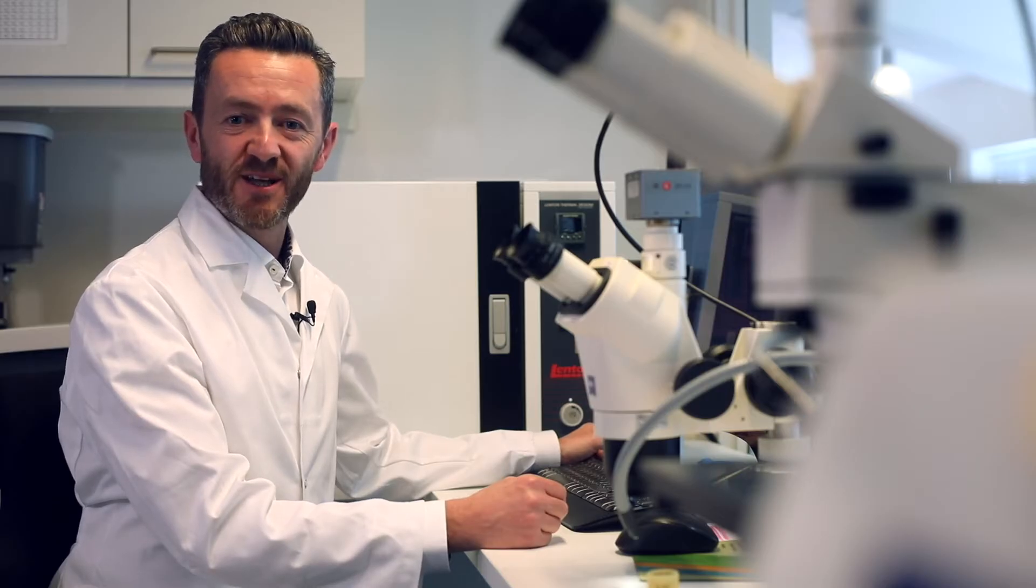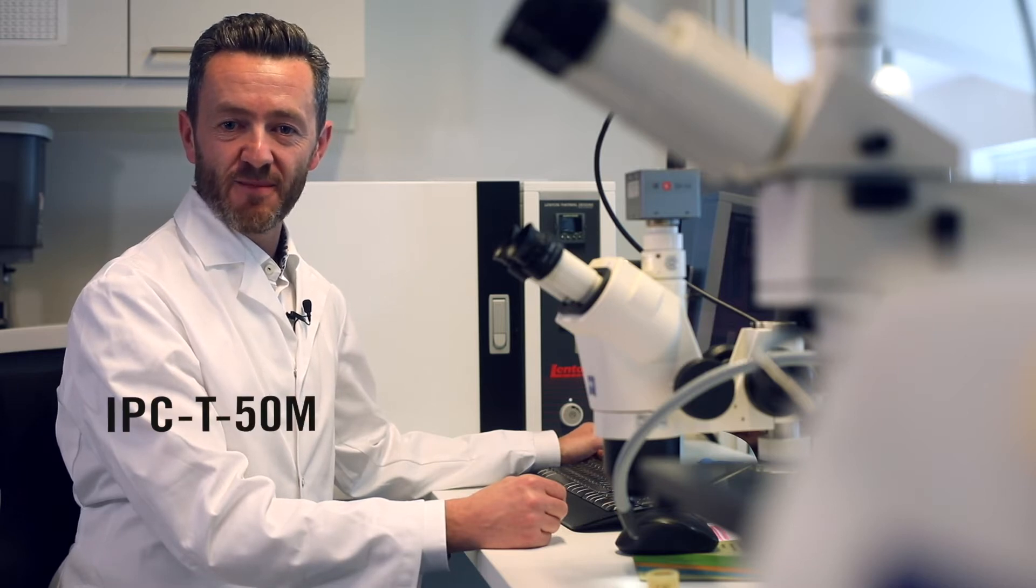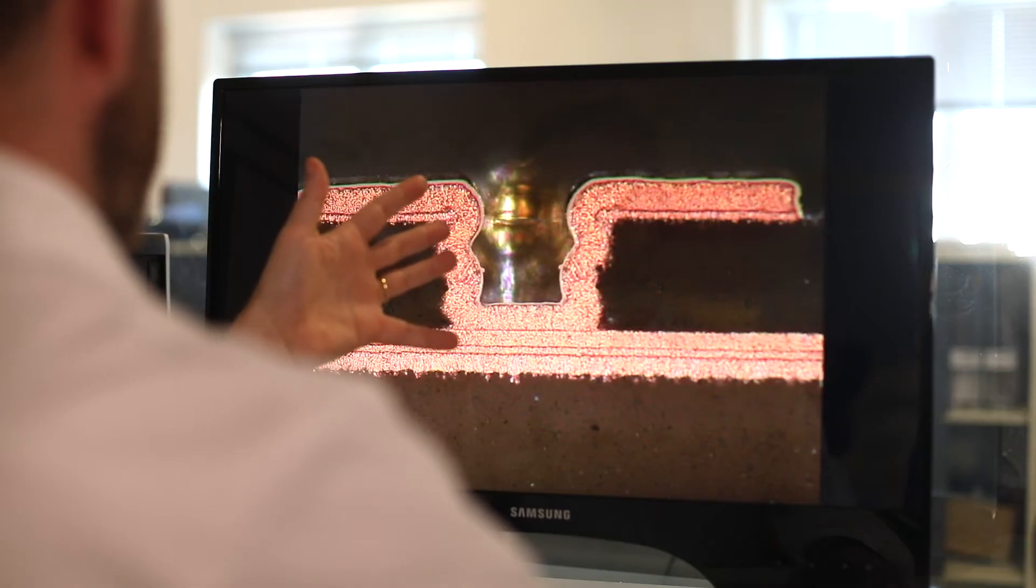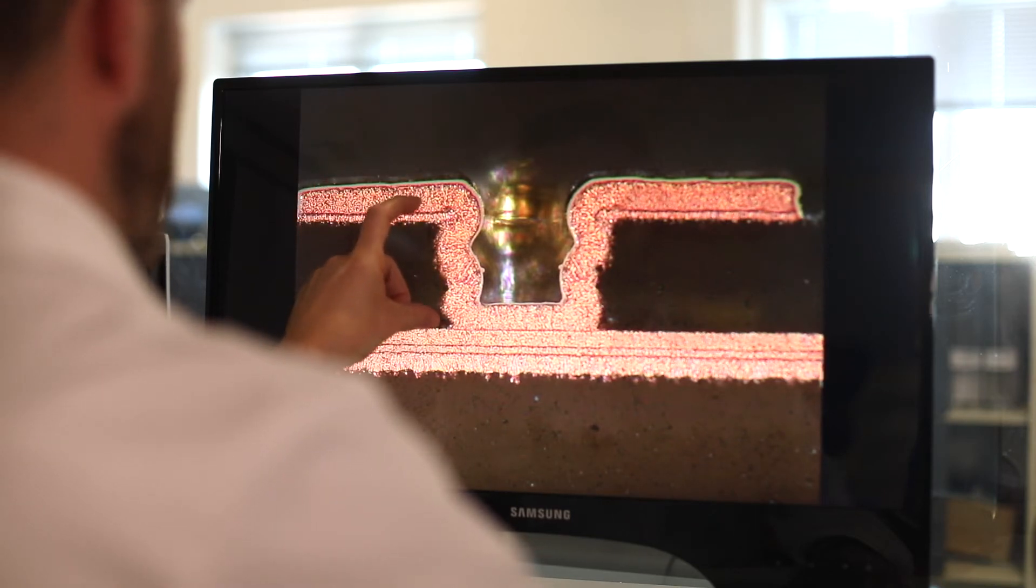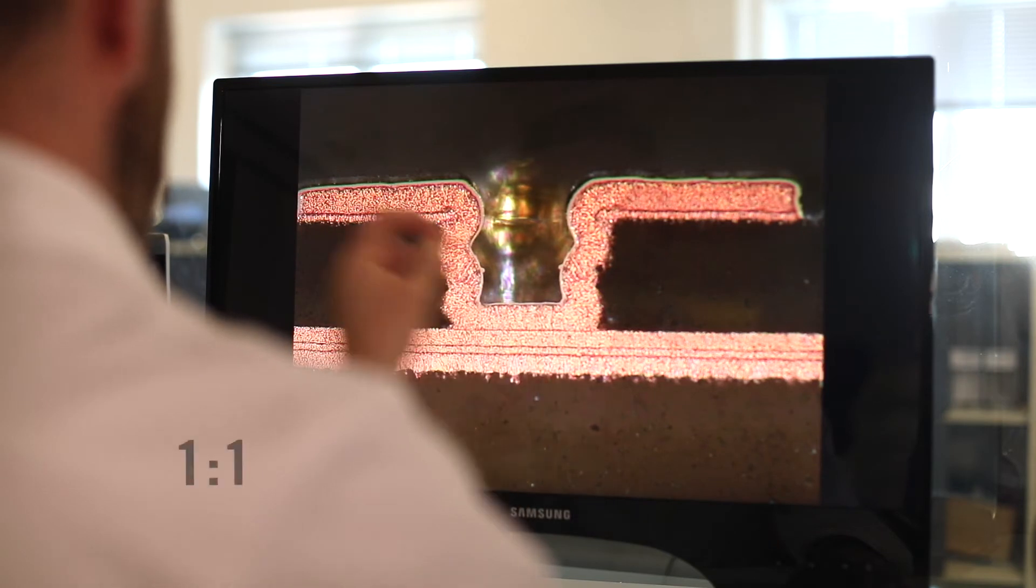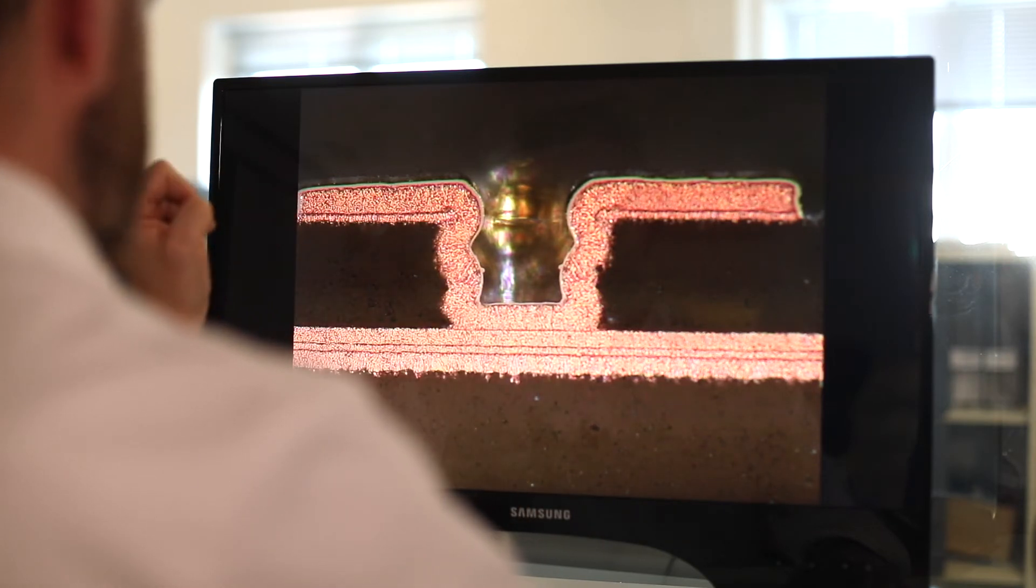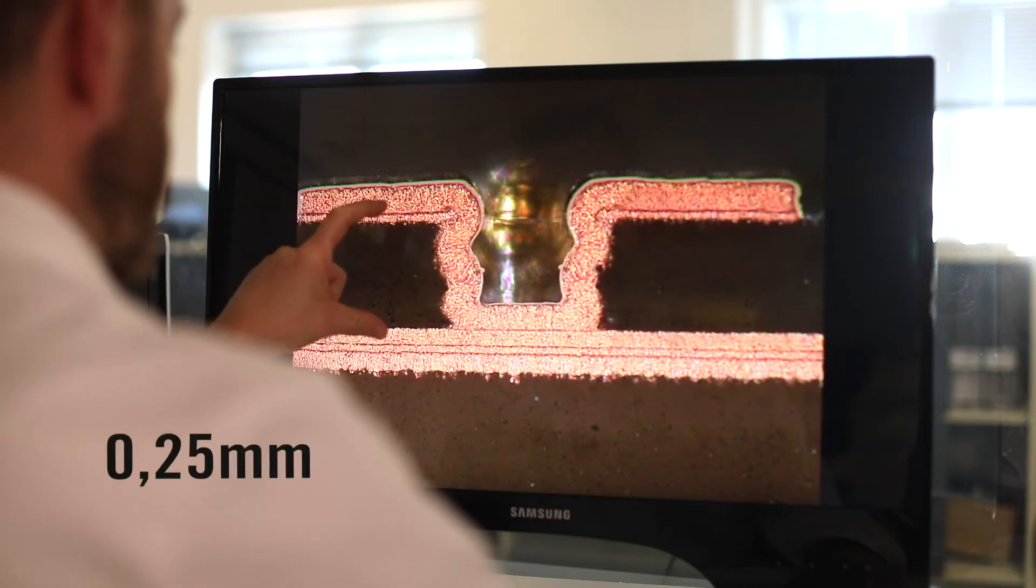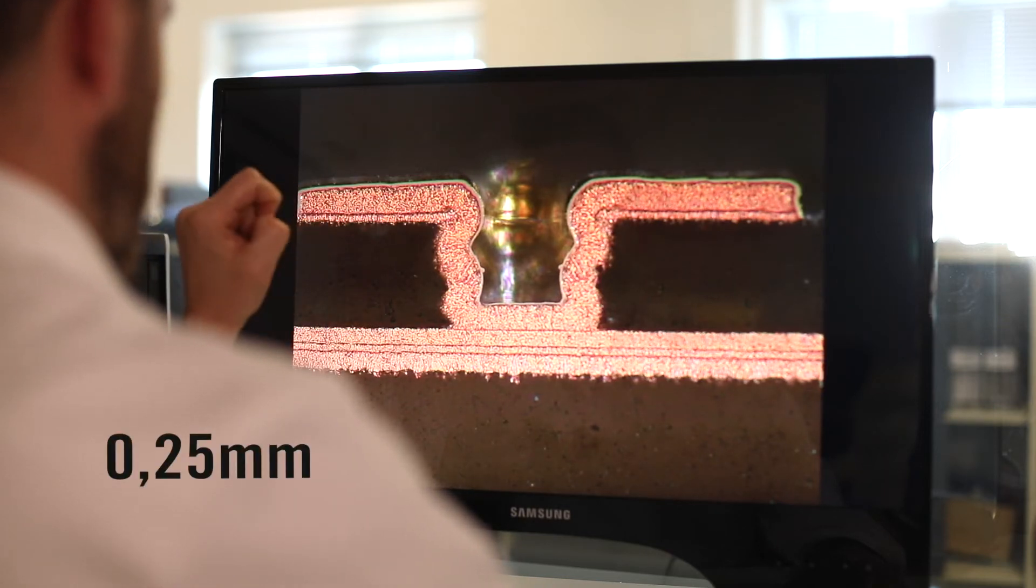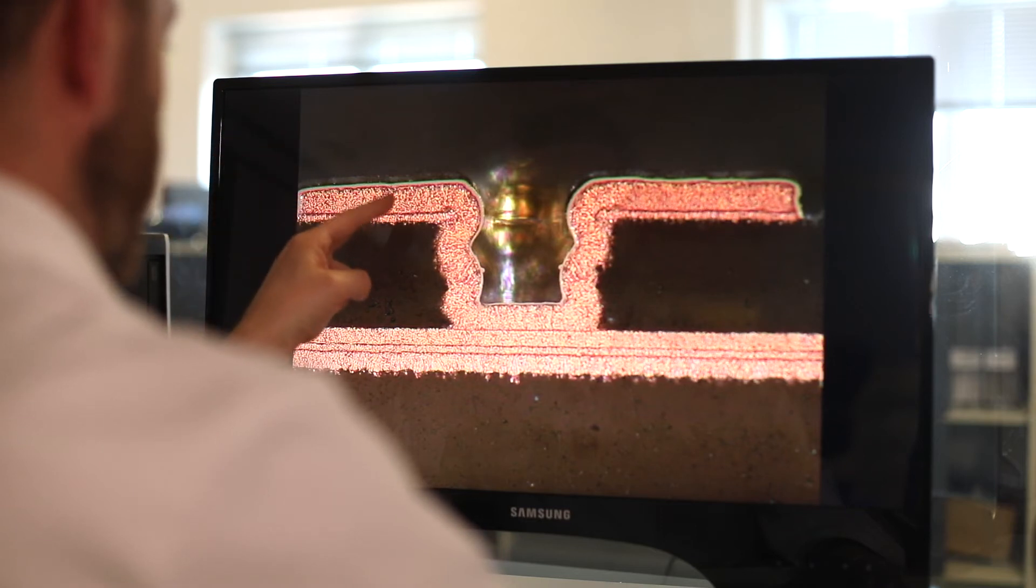According to the definition in IPC T50M, a microvia is a blind structure with a maximum aspect ratio, which is a measure of ratio between the depth of the hole and its width of one-to-one, terminating on a target land with a total depth of no more than 0.25mm when measured from the structure's capture land foil to the target land.